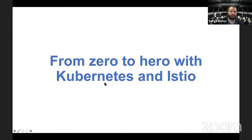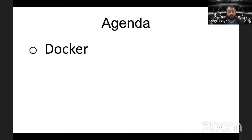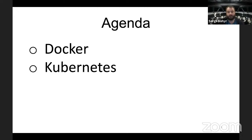Thank you, Marta. Hello everyone. So let's start our talk today. We are going to talk about Kubernetes and Istio and how to run a simple JVM application in Kubernetes with Istio from scratch. My name is Sergi, I work for Hazelcast, and I'm a senior software engineer in the cloud native team. You can see my contacts — if you have any questions afterwards, you can contact me on Twitter or via email. Today we are going to talk about Docker, how to run the application in Docker, how to make it run inside Kubernetes, and how to roll out Istio on top of it. Each part will have a short demo.